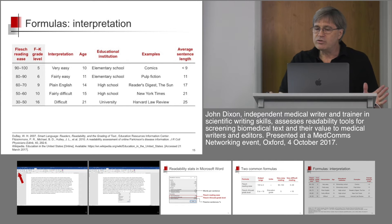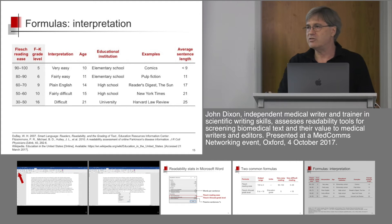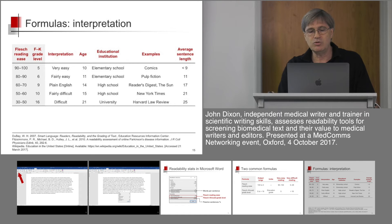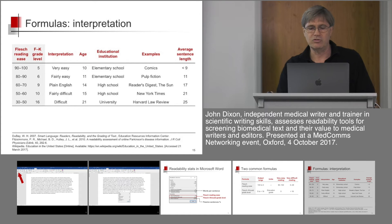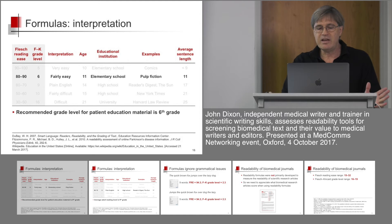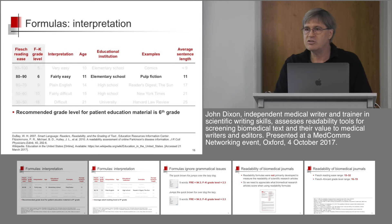Here's a table of the outputs of these two formulas against different levels of reading difficulty — educational institution, typical reading material at that level, and sentence length. Very easy reading: a Flesch score around 90 to 100, Grade Level 5, equivalent to Elementary School, with typical writing seen in comics with sentences of around 9 words or less. The recommended grade level for patient education is about 6th grade — later in elementary school, the sort of text you read in Pulp Fiction, with slightly longer sentences.